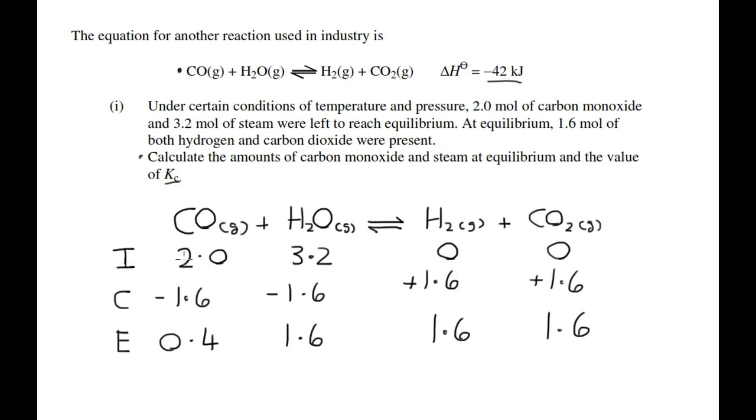I'm going to write in the change. The reactants are going to decrease because they're reacting to make products. Because it's a 1 to 1 to 1 to 1 ratio, the change is going to be the same for the reactants. Both are going to decrease by 1.6, and the products are going to increase by 1.6. So now we have our equilibrium values.